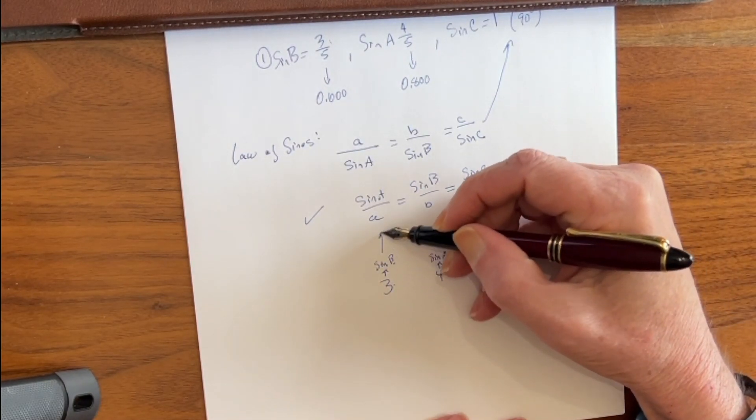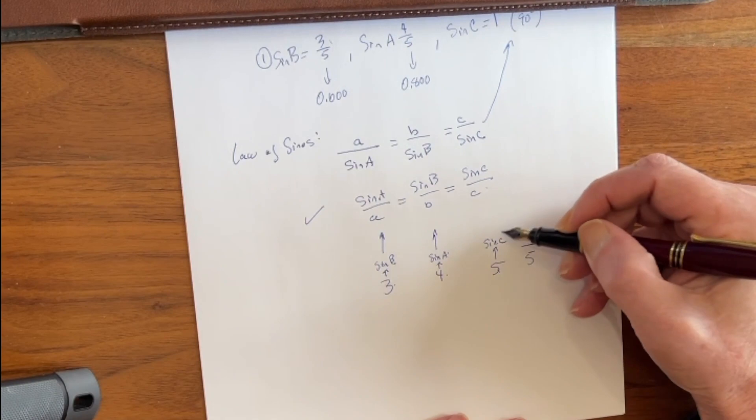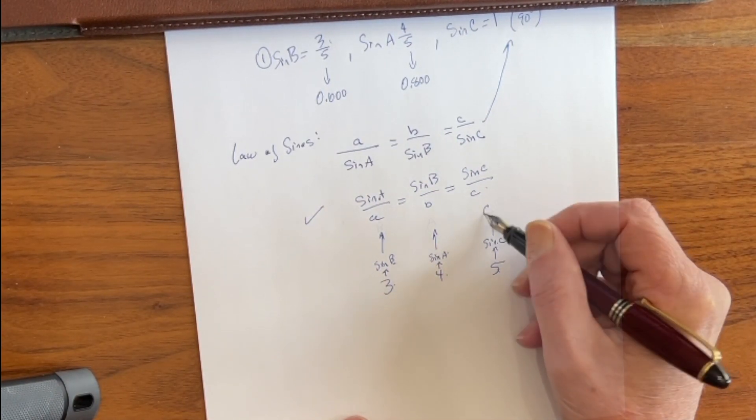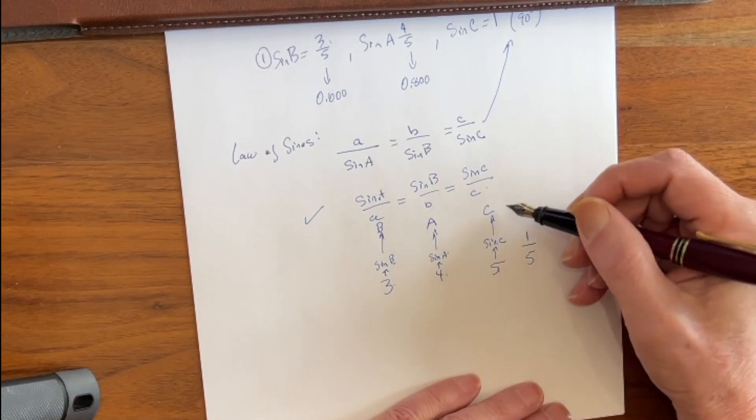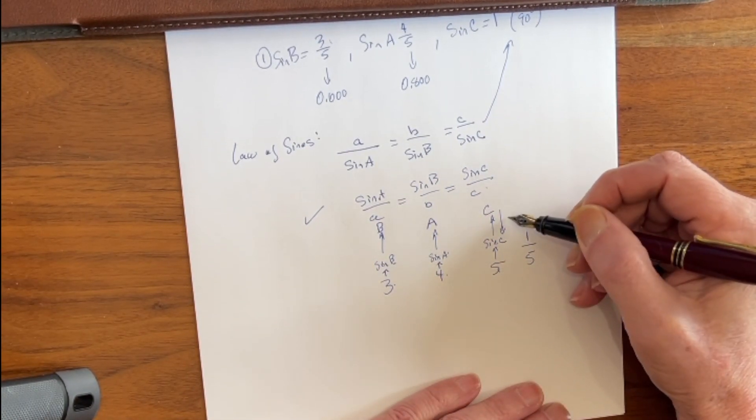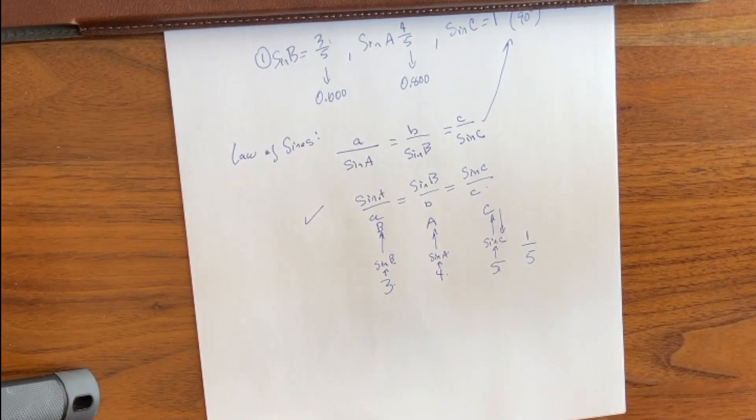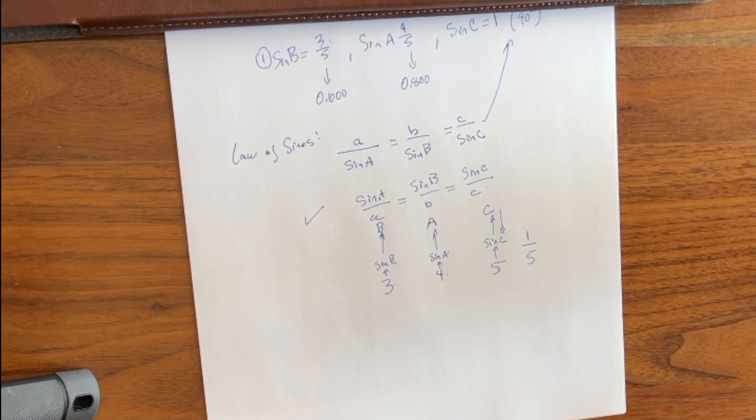However, directly above that, on the sine scale, we have the angle. Now when we go in this direction, we're taking the sine. When we come back up and reverse it, that's called an arc sine. And on a slide rule, that's extremely easy to do. Let me show you.